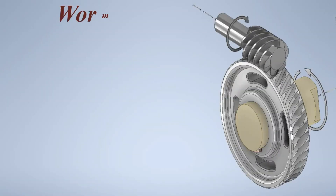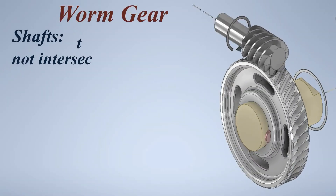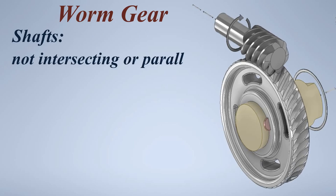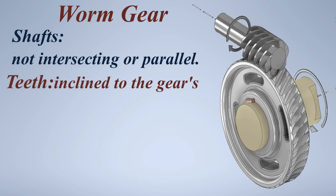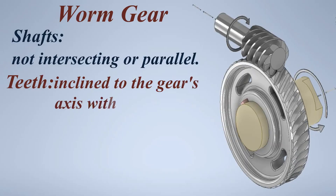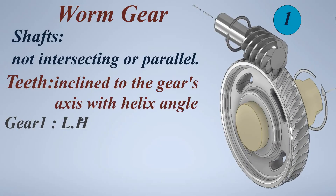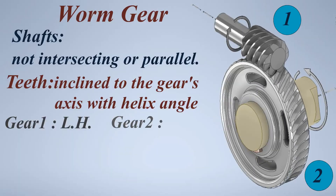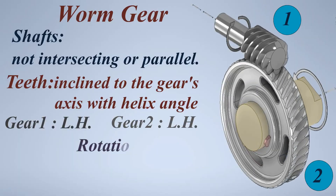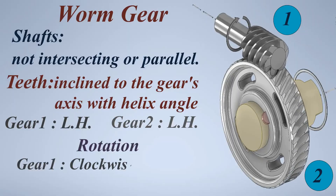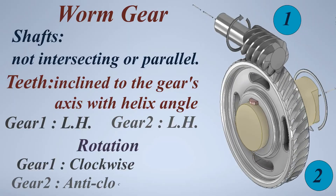Worm gear. Shafts: not intersecting or parallel. Teeth: inclined to the gear's axis with helix angle. Gear 1: left hand. Gear 2: left hand. Rotation — Gear 1: clockwise, Gear 2: anticlockwise.